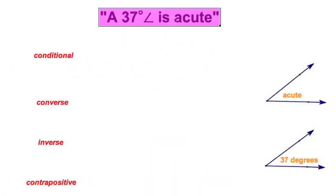Let's start with this statement. A 37 degree angle is acute. We're going to write this as a conditional statement, write its converse, its inverse, and its contrapositive. So let's get started with our introduction to formal logic.